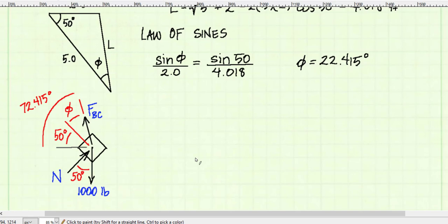Now that I know my angle phi, I can go back to my free body diagram, and I can show the orientation of force BC relative to the horizontal. It's 72.415 degrees. Now I'll write my equations of equilibrium.